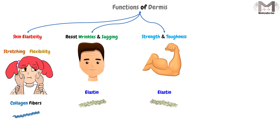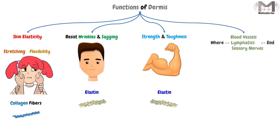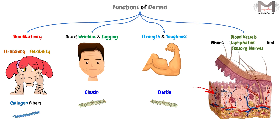Finally, the dermis will be the terminal site of blood vessels, lymphatics, and sensory nerves, where they will end. It is also considered the site of origin from where the hair roots and glands arise.